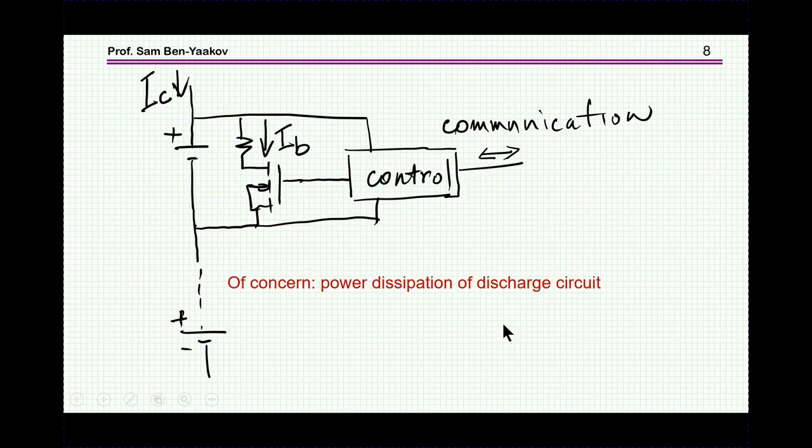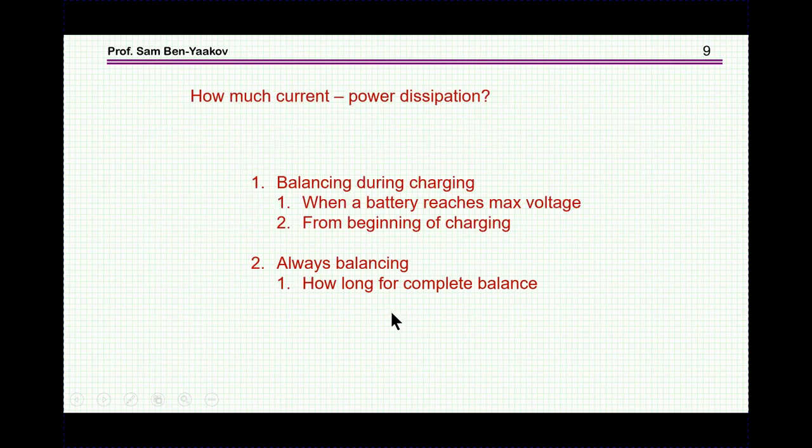One concern that we have to worry about is the power dissipated by the switches, because it really depends on the mode of operation, and obviously, we are heating up, all the power is going to heat, and temperature will rise, so we have to have a heat removal system here, or to work with low current. The question is, how much current do we have to have to bypass or discharge the battery, and what's the power dissipation expected? A cell of lithium-ion is about 3.5 on the average volt, so 1 amp is 3.5 watts, and so we have to worry about the power or the heat that we have to remove.